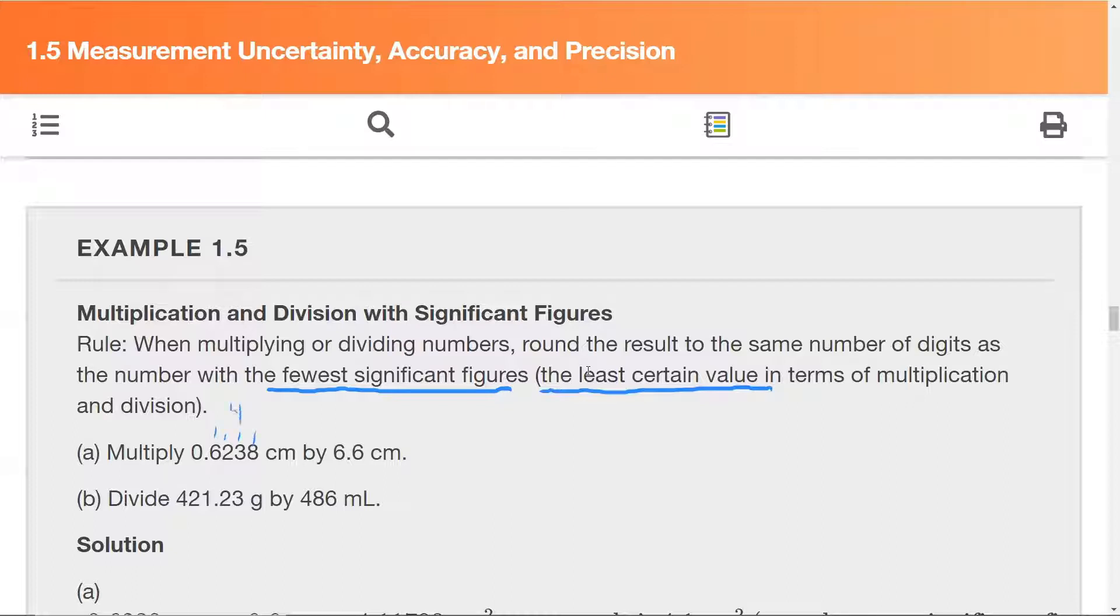And then here we've got two significant figures. So I've got my handy calculator, multiply 0.6238 times 6.6. And what I get is 4.11708.